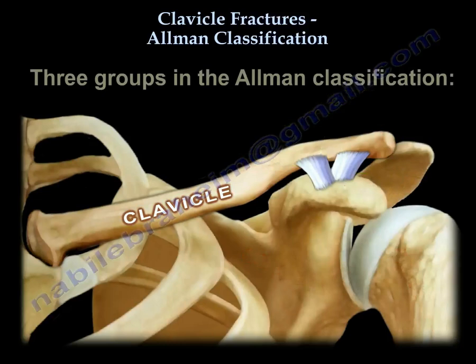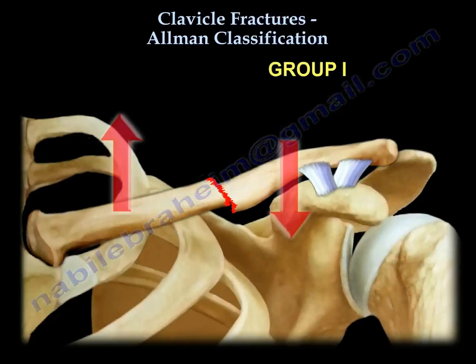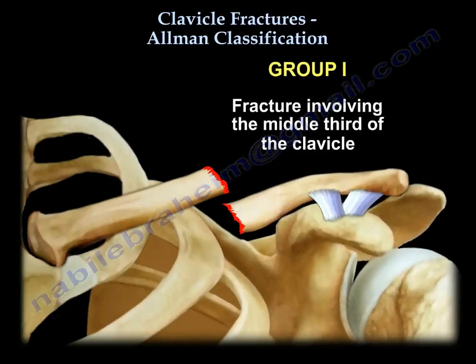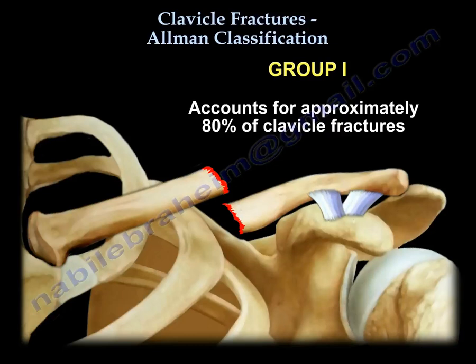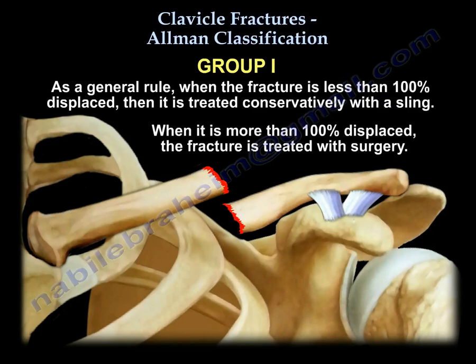There are three groups in L-Mann classification. Group 1 is a fracture involving the middle third of the clavicle, accounting for approximately 80% of clavicle fractures. As a general rule, when the fracture is less than 100% displaced, it is treated conservatively with a sling, but when the displacement is more than 100%, the fracture is treated with surgery.